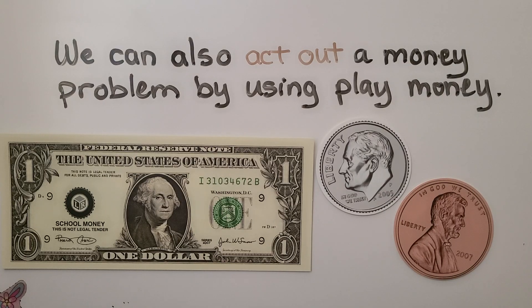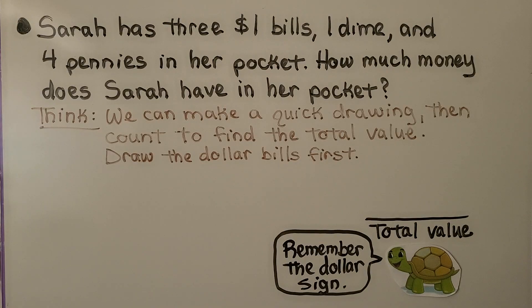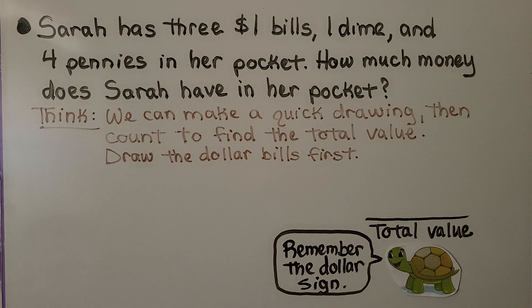We can also act out a money problem by using play money. Here's a problem: Sarah has three $1 bills, one dime, and four pennies in her pocket. How much money does Sarah have in her pocket? We think we can make a quick drawing then count to find the total value. We draw the dollar bills first — we draw the greatest values first.